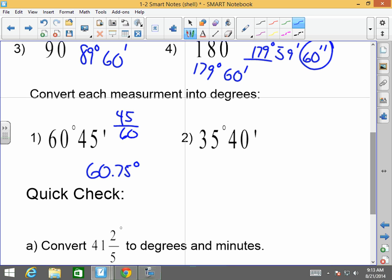How about 35 degrees and 40 minutes? Well, this is going to be 40 over 60, which is two-thirds. So, this would be 35 and two-thirds degrees. So, when you're going from degrees to minutes, you're going to multiply the fractions by 60. When you're going from degrees and minutes to just degrees, you're going to divide by 60. Does that make sense?